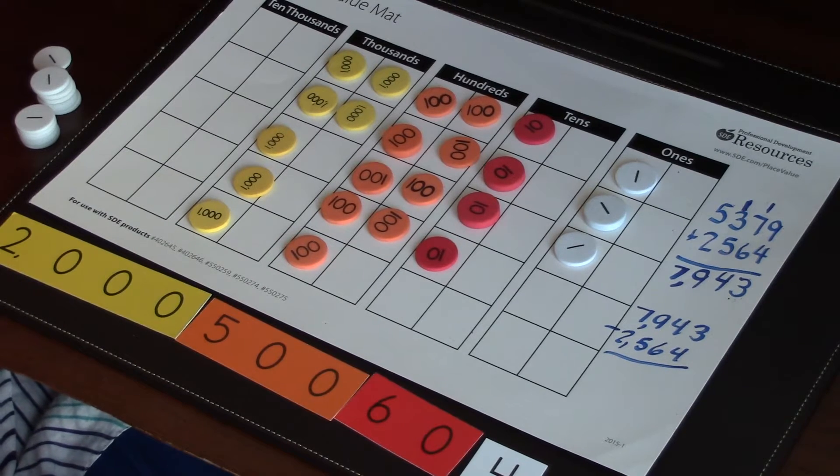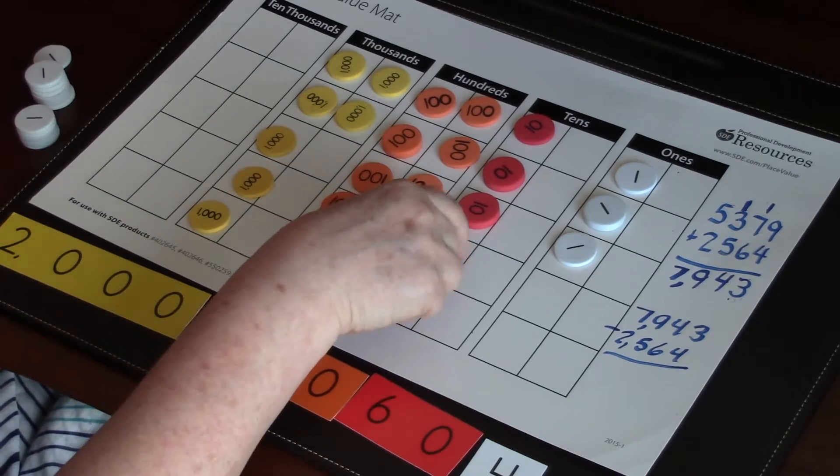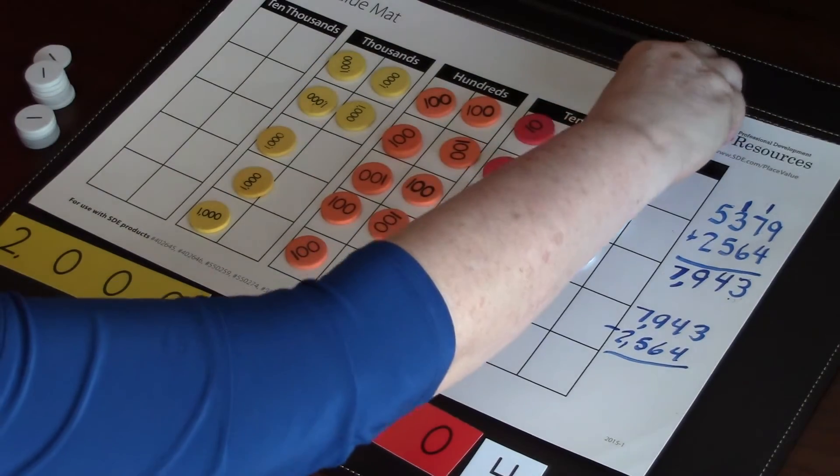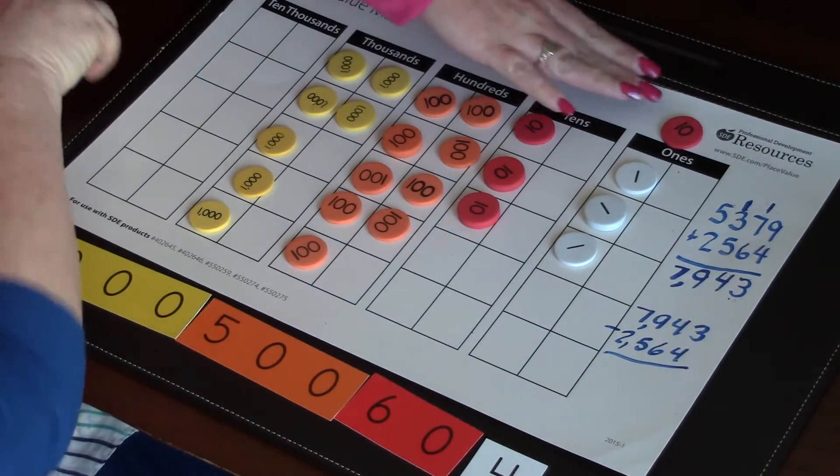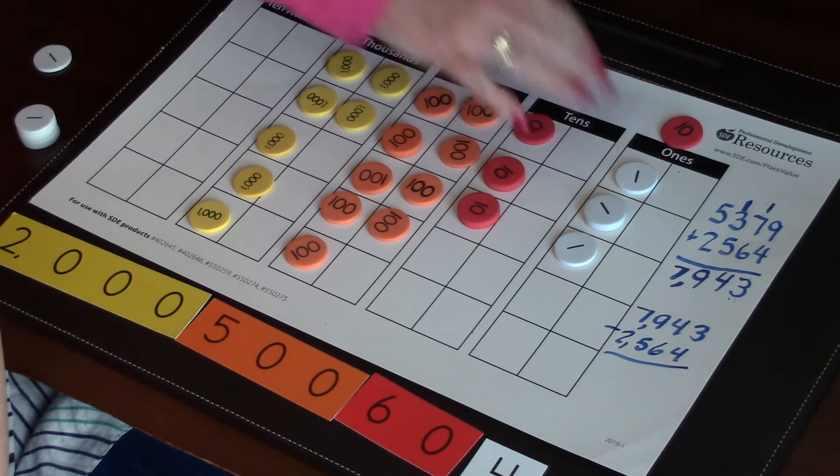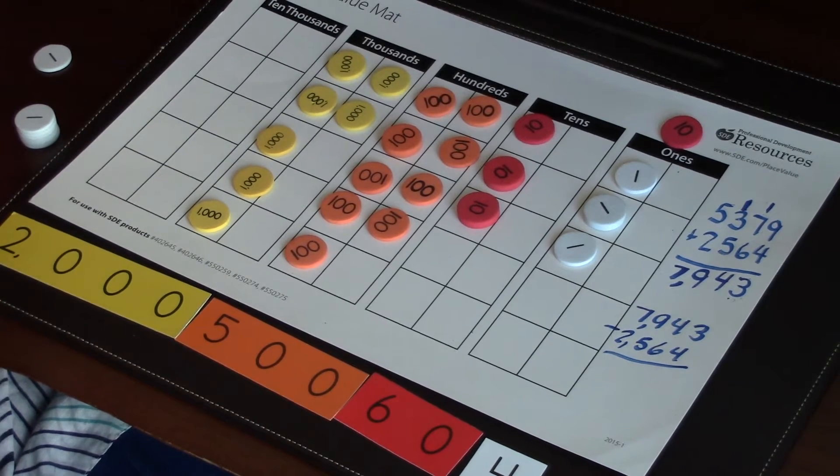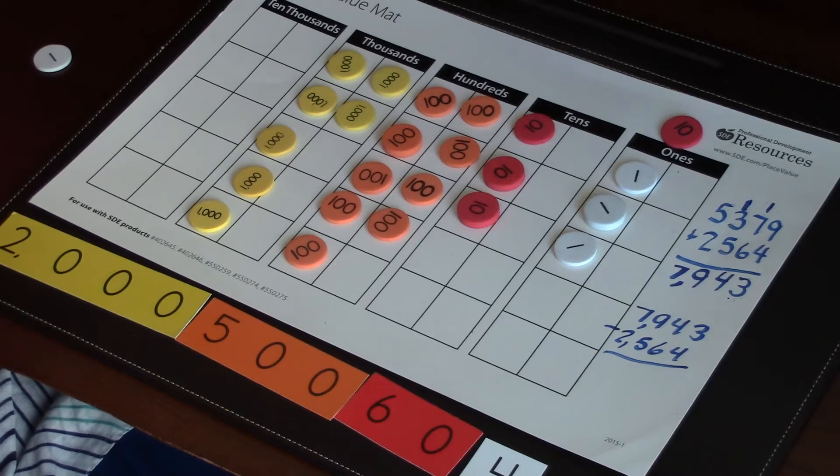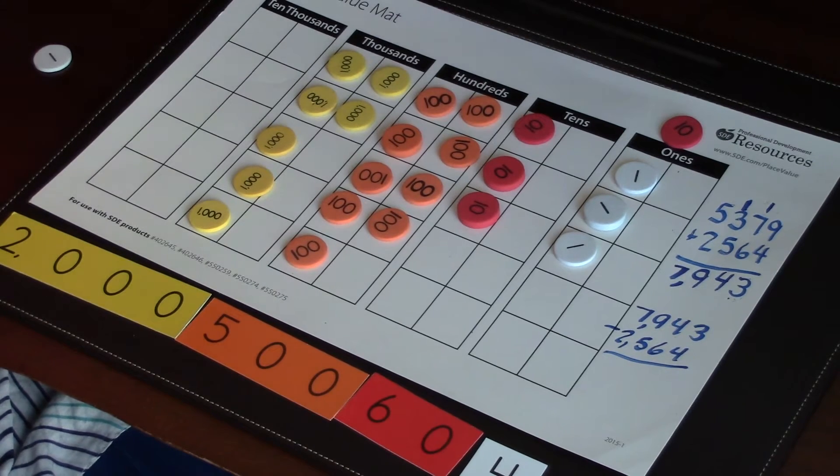So since I can't do that, what do we have to do? I have to make a fair trade. So we're going to move a 10 over. Now, what value are you showing right here in your ones place by moving that 10 over? 13.